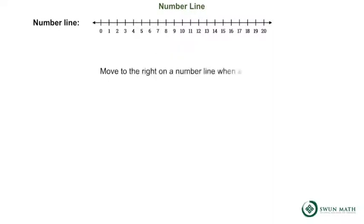Number line. Here is an example of a number line. This number line goes from 0 to 20. Move to the right on a number line when adding.